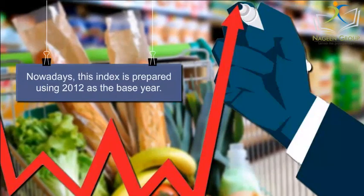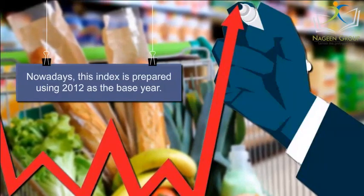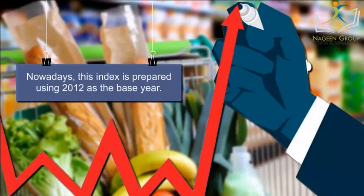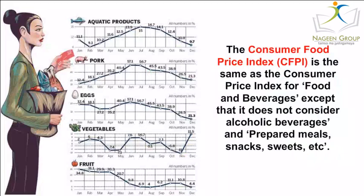The Consumer Food Price Index is the same as the Consumer Price Index for food and beverages, except that it does not consider alcoholic beverages and prepared meals, snacks, sweets, etc.